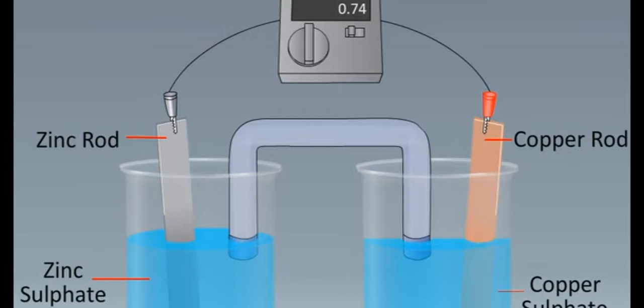The metallic rods in the beaker are connected to the ammeter by means of an insulated wire through a key. Ammeter is used to know the passage of current which moves in opposite direction to the flow of electrons.